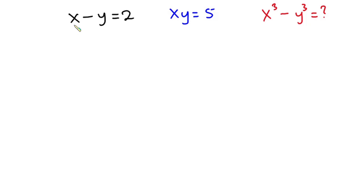Hello everyone, in this video we have this nice problem. We have x minus y is equal to 2, then we also have x times y is equal to 5, and we have to find the value of x to the 3rd power minus y to the 3rd power.